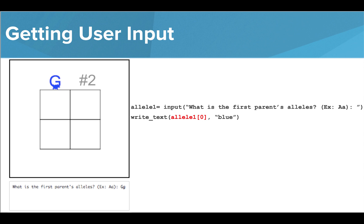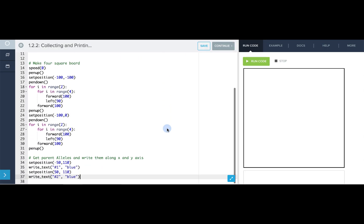Let's go to the editor to print the second letter to position two. After Tracy gets to position negative 50, 110, I want to ask the user for the allele pair so I can write their letters on top of the boxes in my Punnett square.